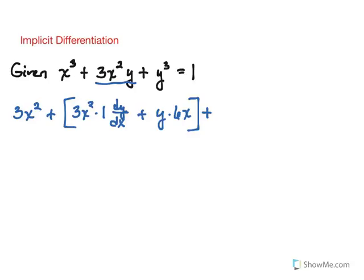Now the derivative of y cubed would be 3y squared, but again it's only implied that y is a function of x here, so we need to include dy/dx. And on the right, the derivative of 1, of course, is just 0.